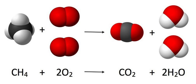A chemical equation is the symbolic representation of a chemical reaction in the form of symbols and formulae, wherein the reactant entities are given on the left-hand side and the product entities on the right-hand side.